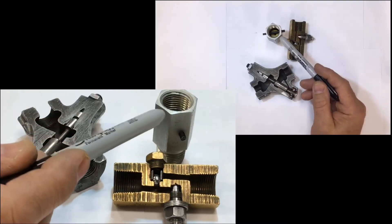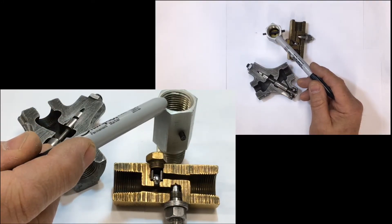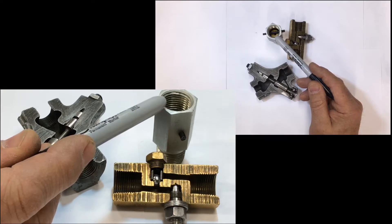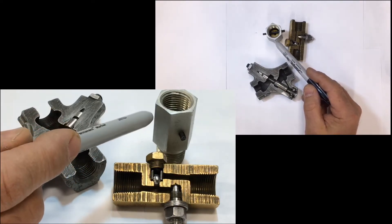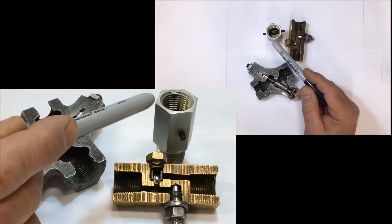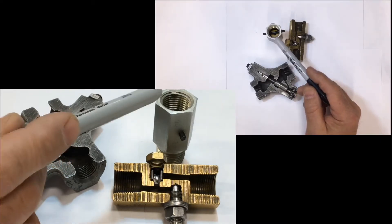You can see on the top view here the little hole in the poppet. That's the restricted flow in one direction, but when the oil flows through in the opposite direction, it lifts the poppet off of its seat and it can free flow through.